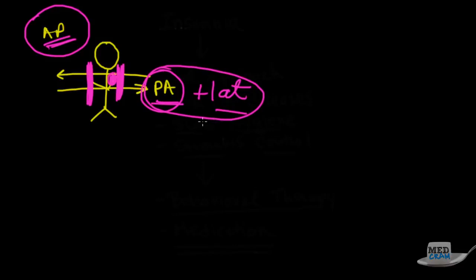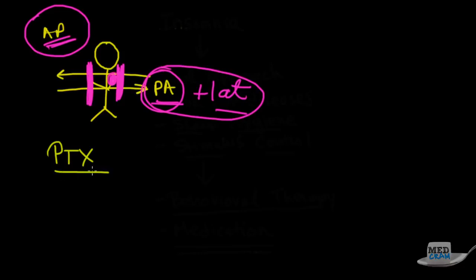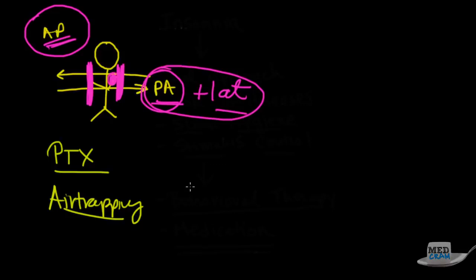Generally speaking, we'd like to have patients take a deep breath in when they shoot the film, so we can see all the different areas of the lungs. However, there are a couple of situations where you want to do an exhalation film — and that is when you're trying to look for a pneumothorax, because that's when the pleural air is going to be greatest and most accentuated. The other reason is if there is air trapping, because that air trapping is going to be accentuated on exhalation, as all of the air is out of the lung except for the area where air is not able to come out.